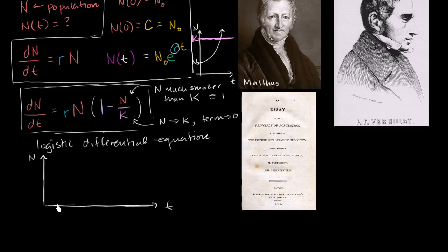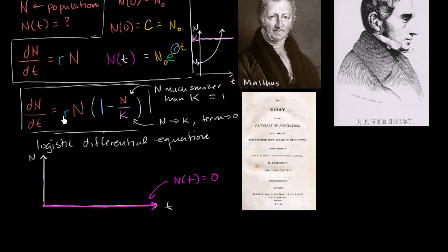If our initial population N(0) is equal to zero, then the N term is zero, so the rate of change is zero, and we won't add any population. That makes sense — if population is zero, there's no one there to have children. So there's actually one constant solution to this differential equation: N(t) = 0. If N₀ is zero, you'll stay at zero forever.